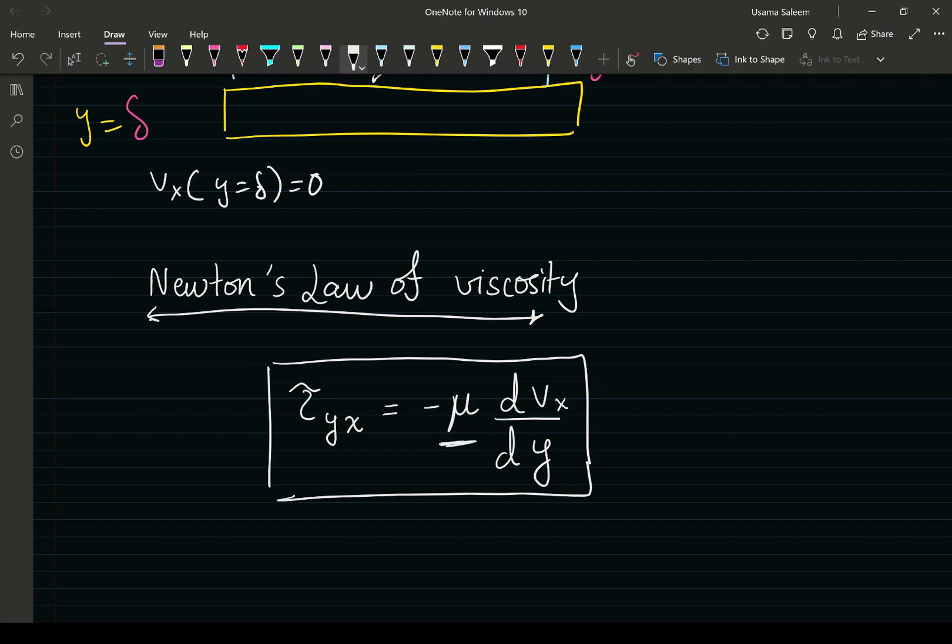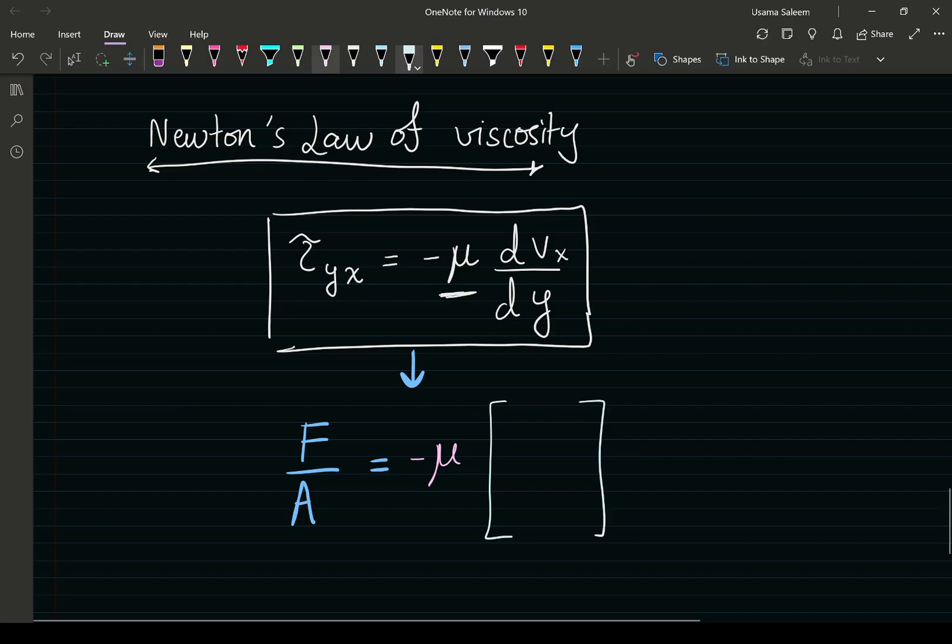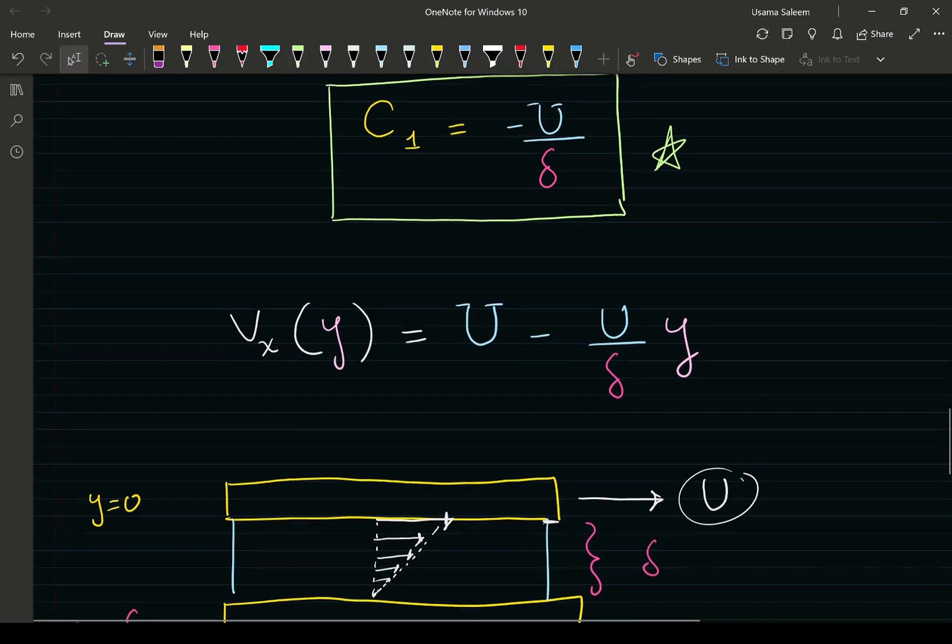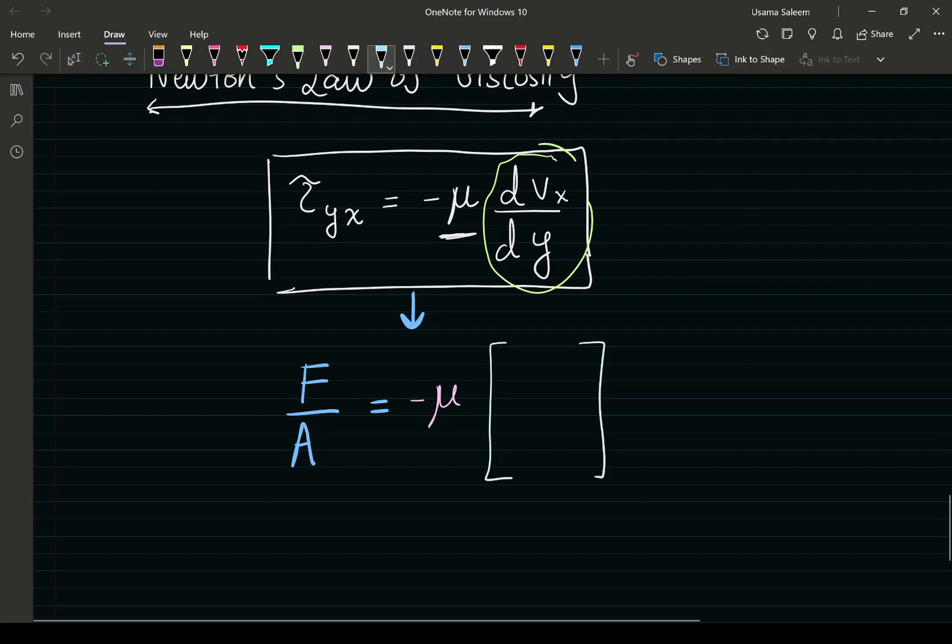Since we have unidirectional flow, flow in one dimension, our shear stress in the y direction due to flow in the x direction equals negative viscosity times the gradient of velocity in x with respect to y. Just some basic calculus.